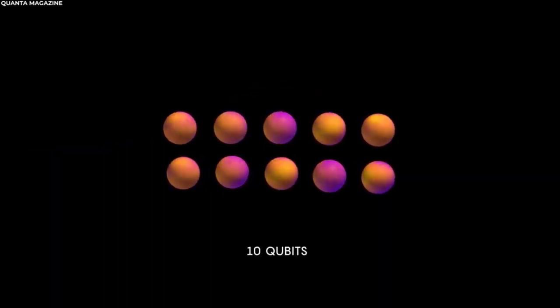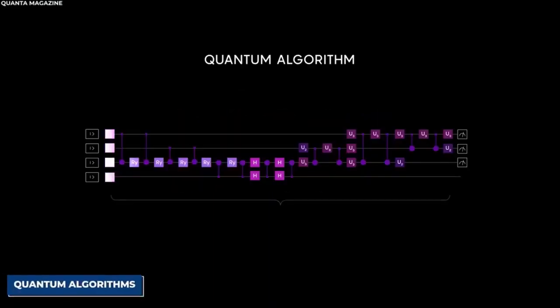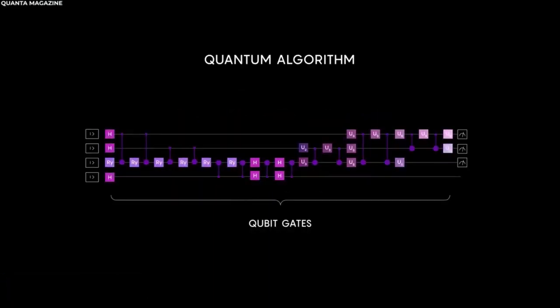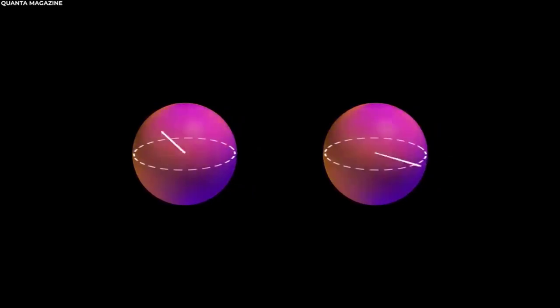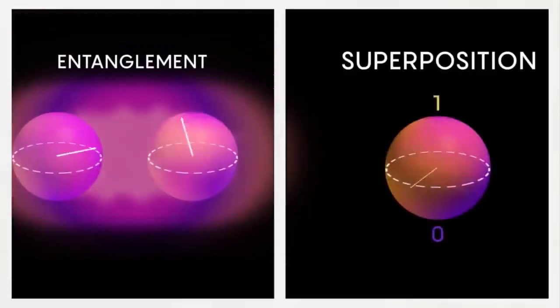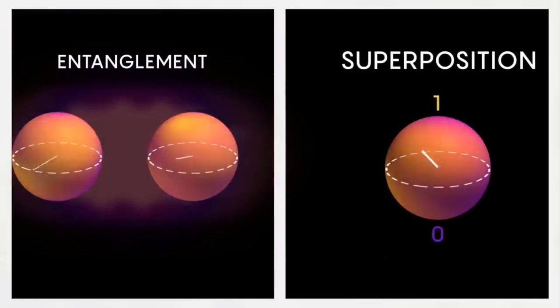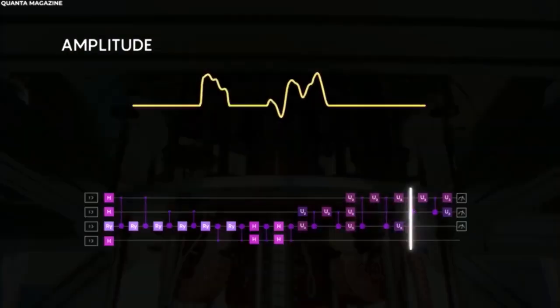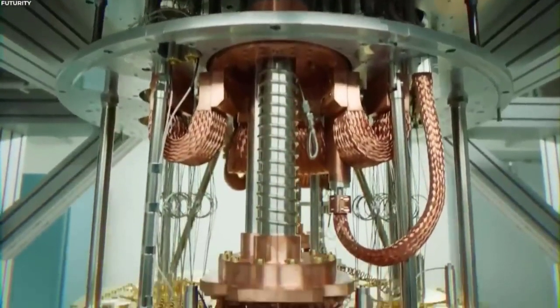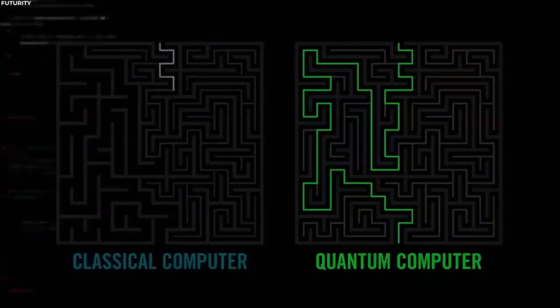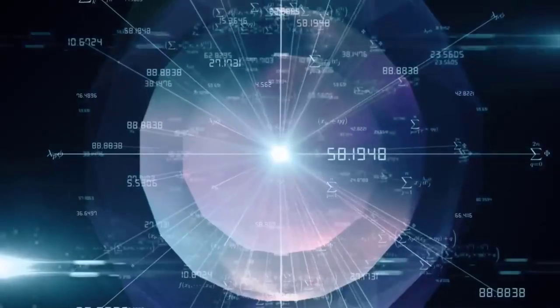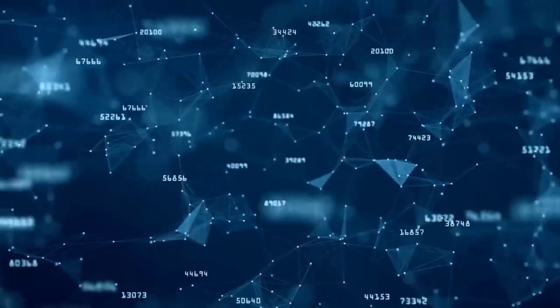So what makes quantum computers so impressive? Well, it's because of the ability to solve certain problems at an exponential speed compared to regular computers. While regular computers plow through information one step at a time, quantum computers can tackle enormous amounts of data all at once thanks to their superposition and entanglement mojo.